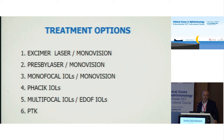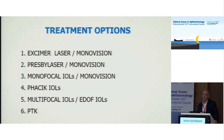The third option is mono-focal IOLs, again with mono-vision or not. We can choose PHAKIC IOLs, or we choose between multi-focal IOLs and depth-of-focus IOLs. The depth-of-focus lenses are like multi-focals but they produce plus 1.5 diopters for near-sightedness and do not have so many rings on the surface, so they don't produce so many aberrations.